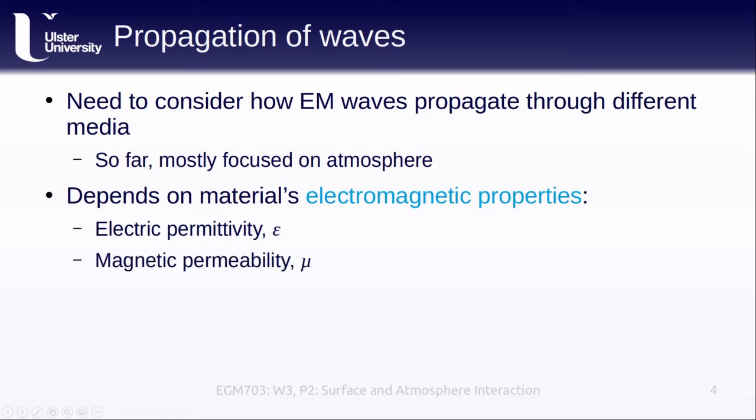The next property is the magnetic permeability denoted mu. This describes how a material responds to a magnetic field. A higher magnetic permeability means that the material is more likely to become magnetized. Finally we have electric conductivity denoted as G, and this depends on how mobile electrons in a material are. In metals for instance, electrons can move freely throughout the material, meaning metals have a high electric conductivity.